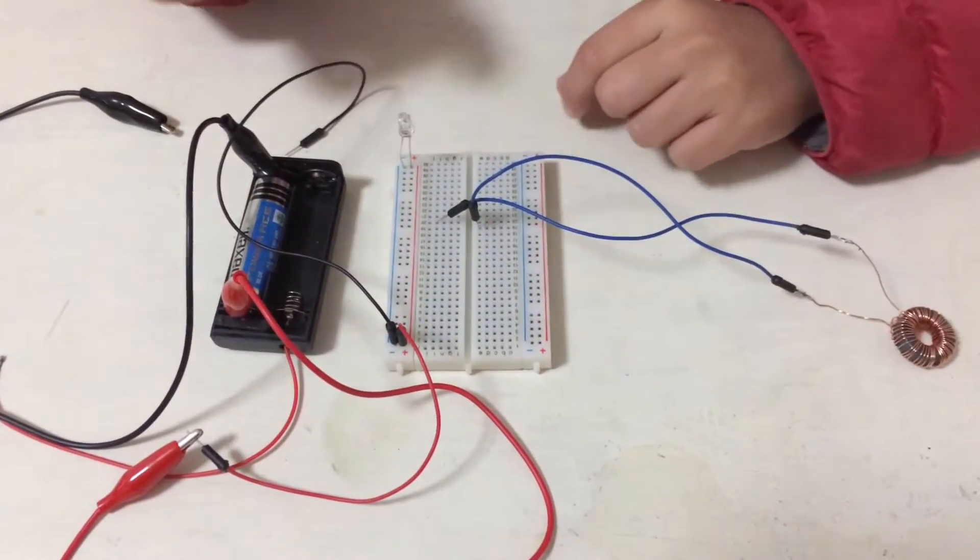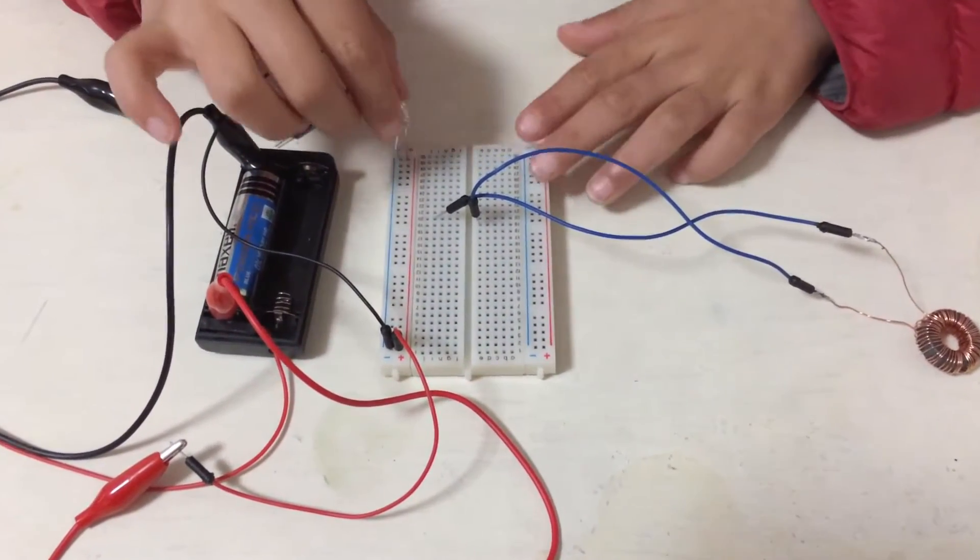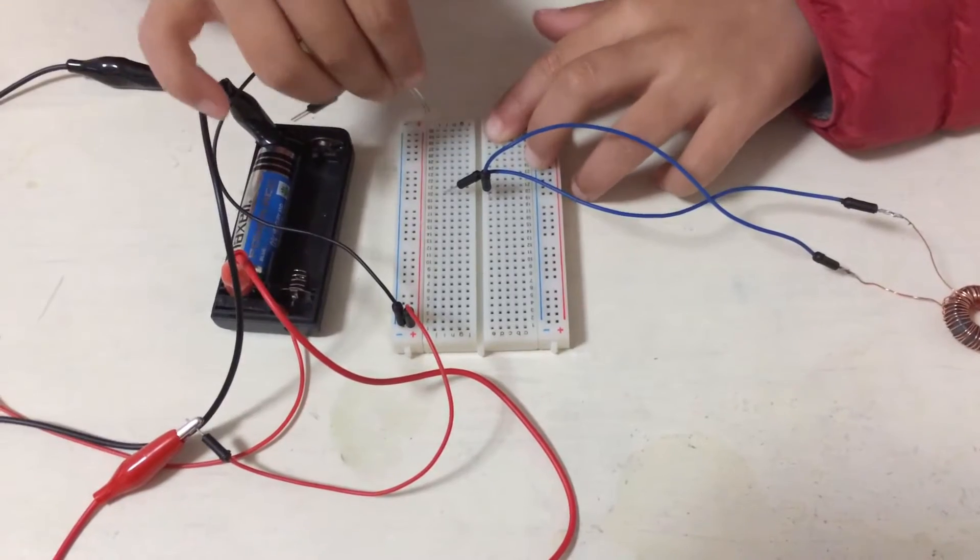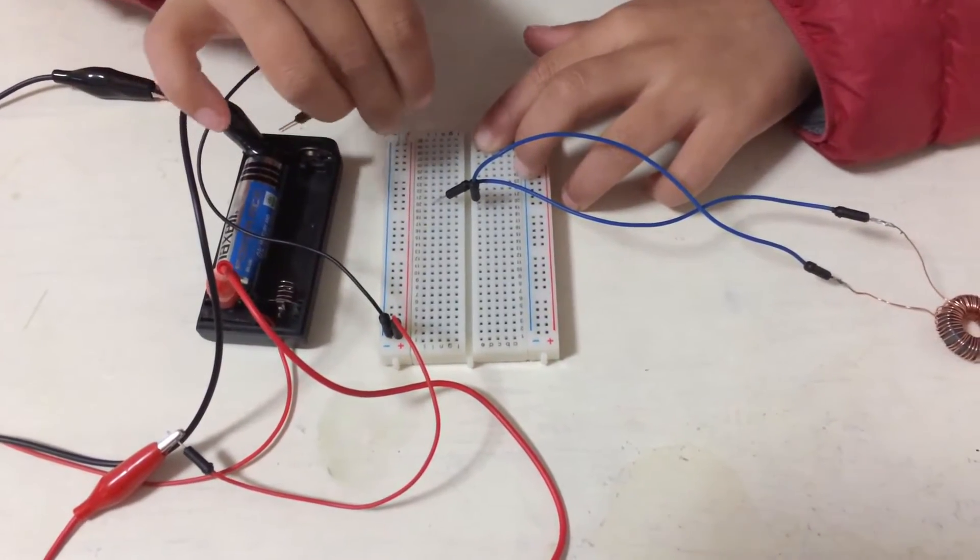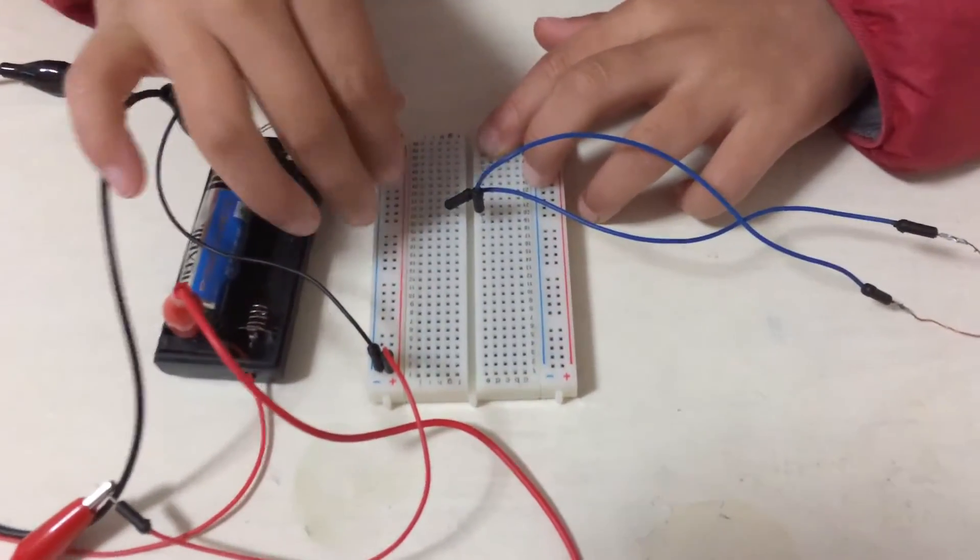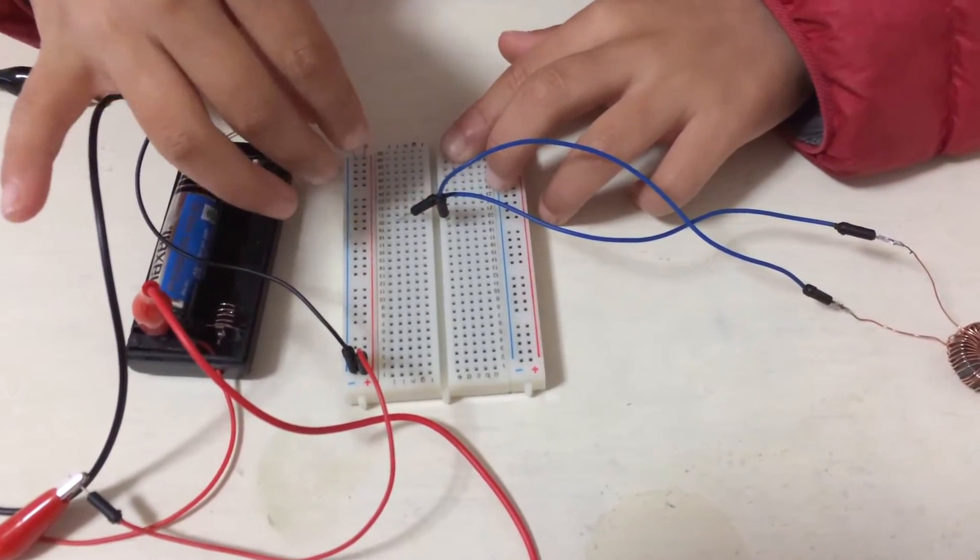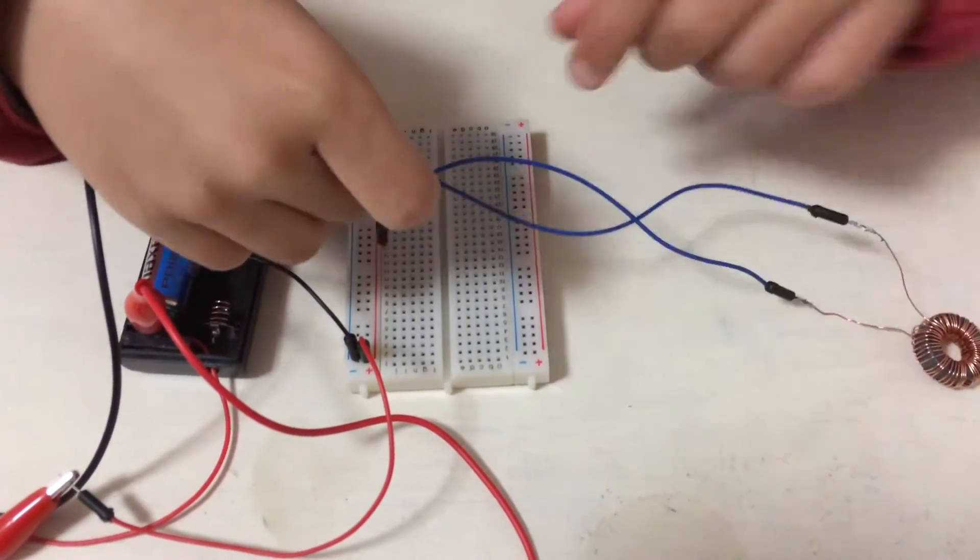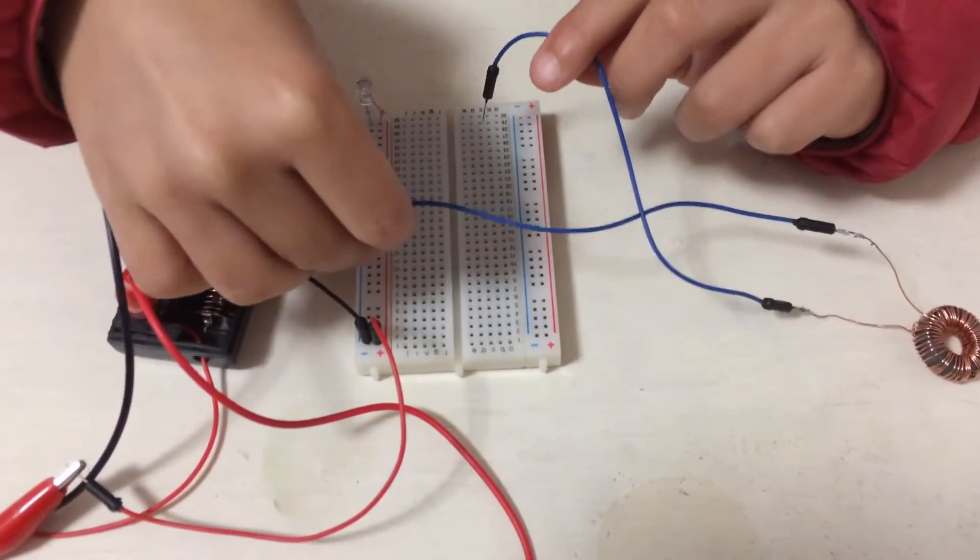I take the earlier circuit and swap the LED around and connect this inductor to the battery. When I connect the battery, a current flows through the coil and creates a magnetic field in the ferrite donut.